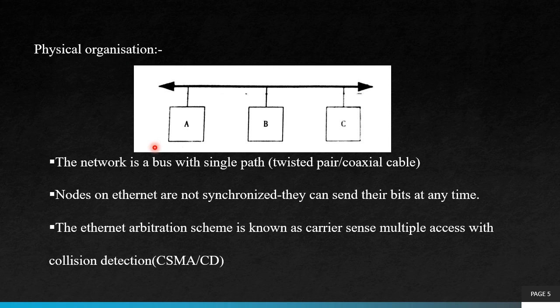Coming on to the physical organization of the Ethernet network. Ethernet is a single bus and all devices are connected to it. The network is a bus with a single path — it can be either a twisted pair or coaxial cable. Nodes on the Ethernet are not synchronized; they can send their bits at any time. Therefore, when two devices try to send data at the same time, the message will be ruined. The Ethernet arbitration scheme used here is Carrier Sense Multiple Access with Collision Detection, or CSMA/CD.